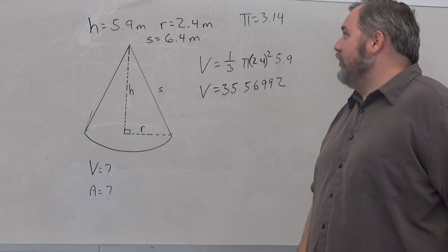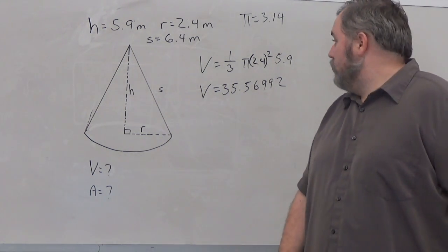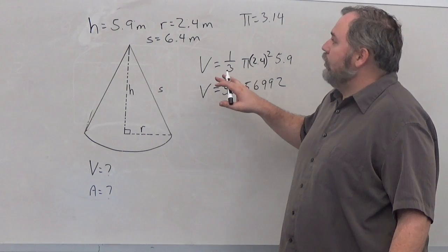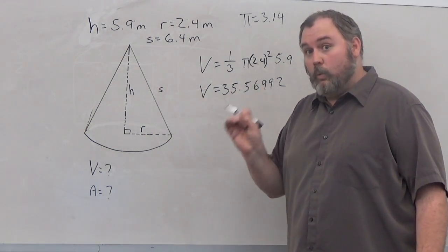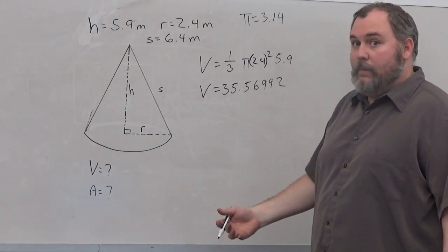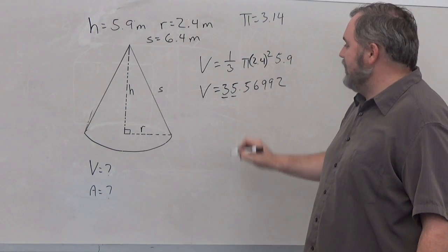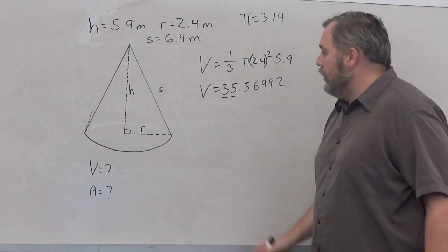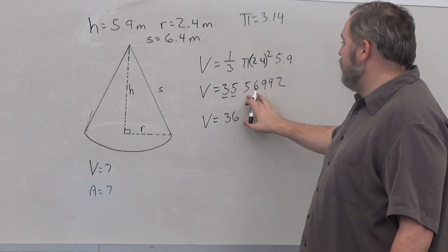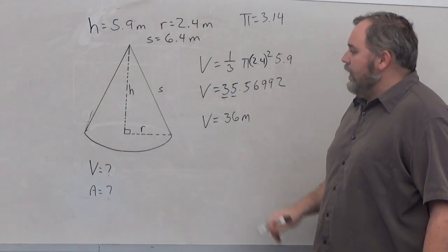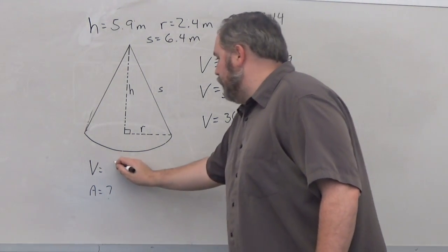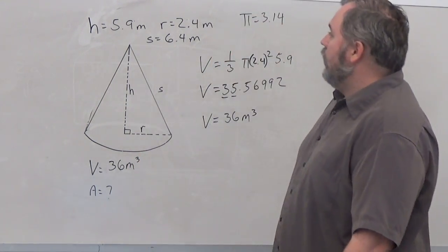Calculating: ⅓ × 3.14 × 2.4² × 5.9 gives 35.56992. We round to two significant figures because each measurement has two significant digits. The first significant figure is 3, the second is 5, and the next digit 5 rounds it up, giving us a volume of 36 meters cubed.